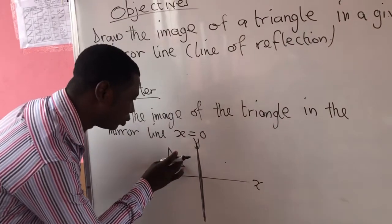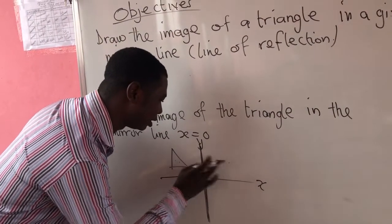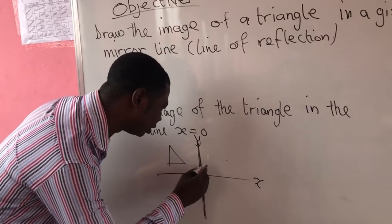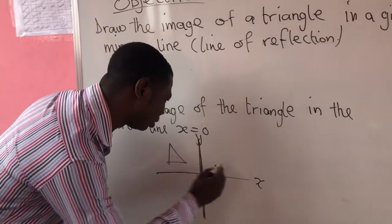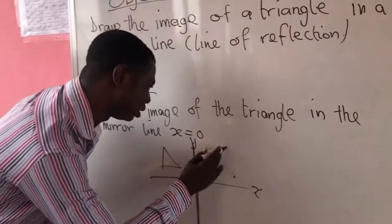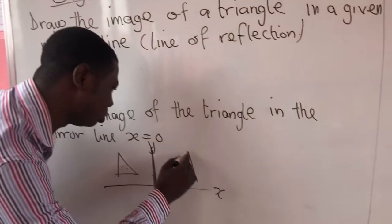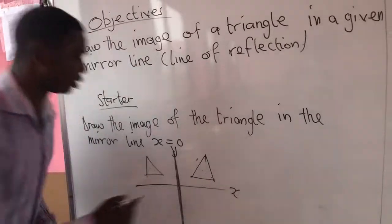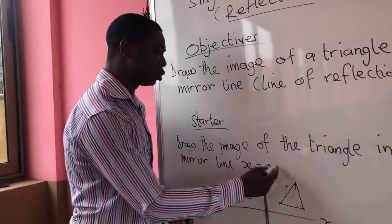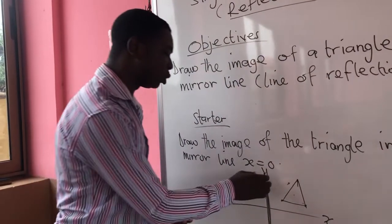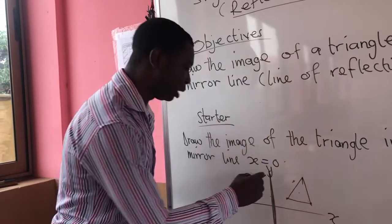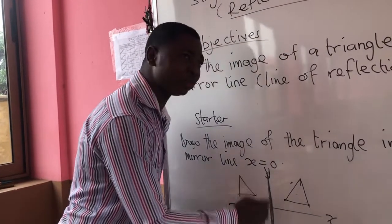So we are going to reflect this image to the other side, by the same distance, using the mirror line y-axis. When we say x equal to 0, we are using the y-axis as our reflection line.